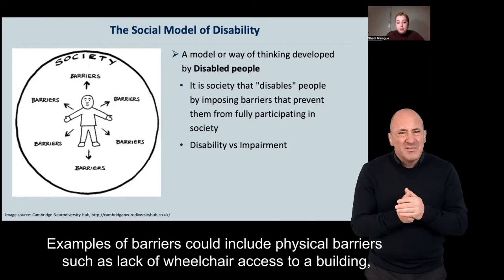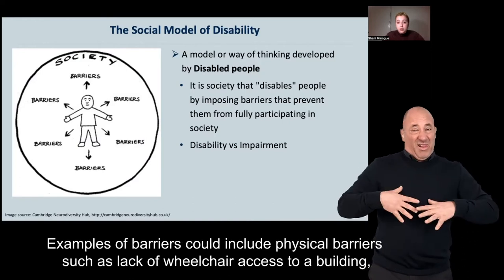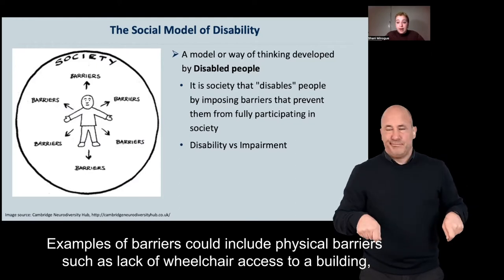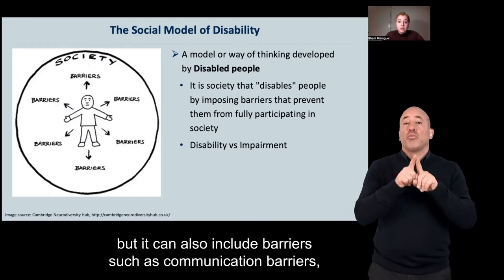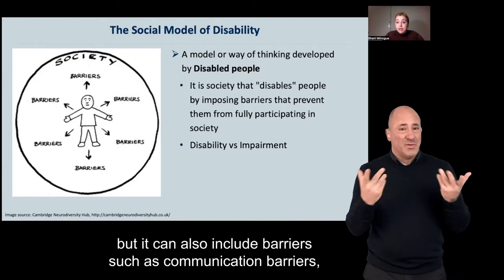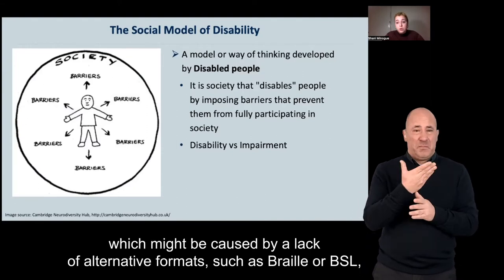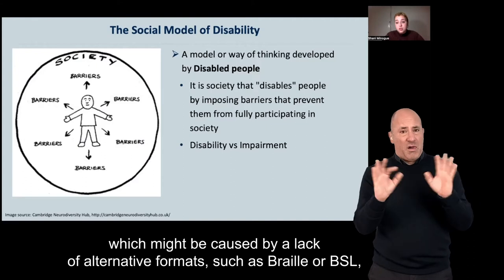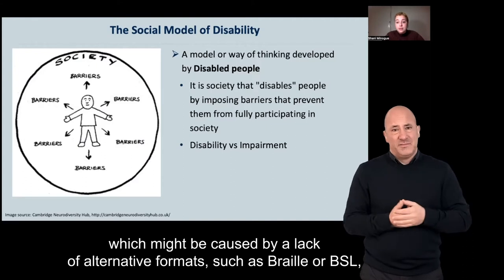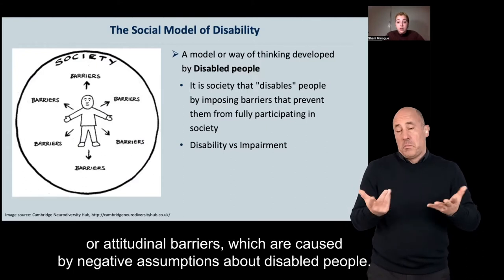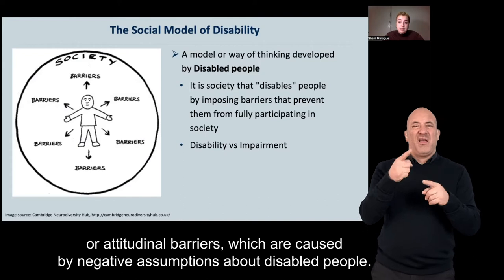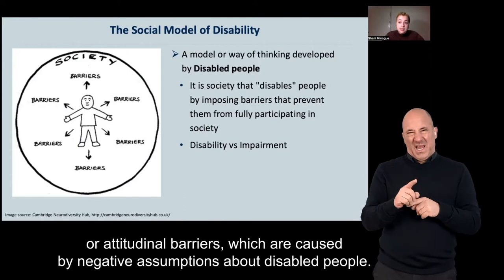Examples of barriers could include physical barriers such as lack of wheelchair access to a building, but it can also include communication barriers, which might be caused by a lack of alternative formats such as Braille or BSL, or attitudinal barriers caused by negative assumptions about disabled people.